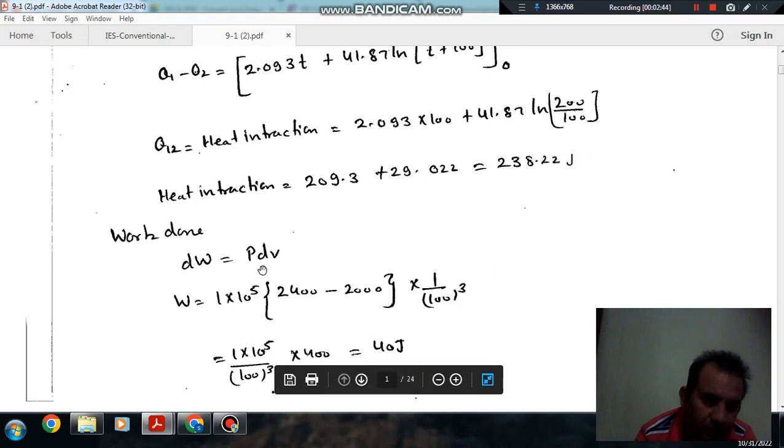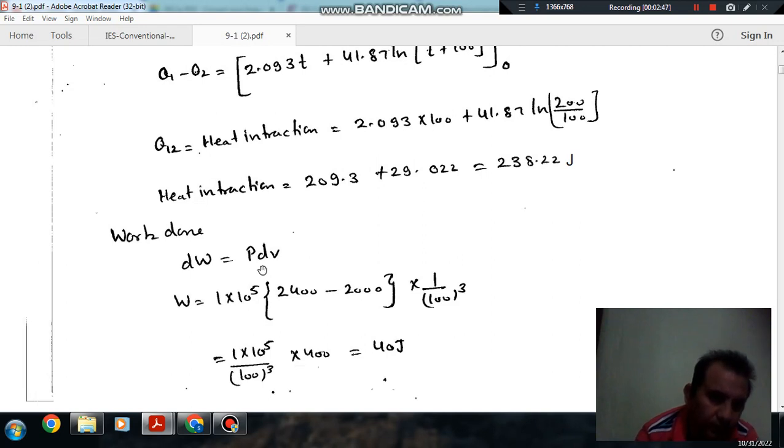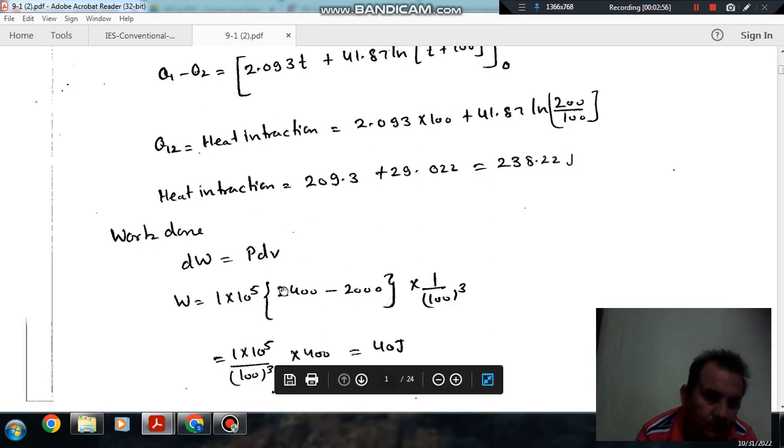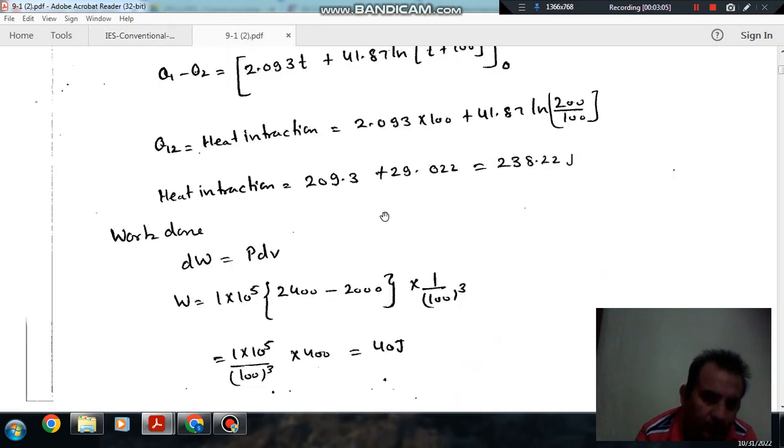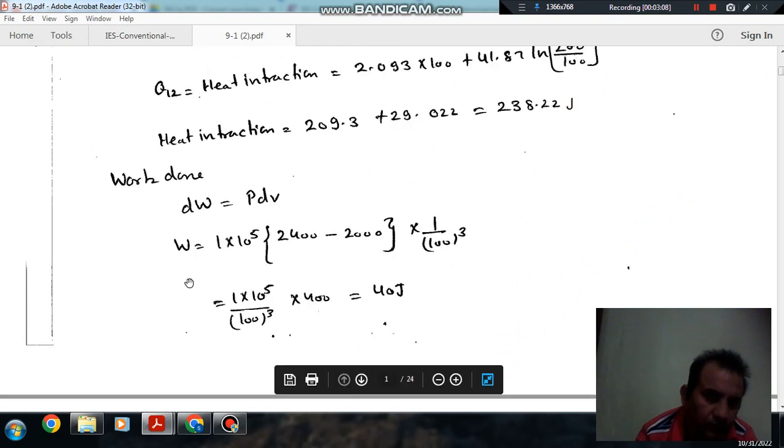As pressure is constant, work done is P(V₂ - V₁). Final volume and initial volume are given. Final volume is 2400 and initial volume is 2000, units are centimeter cube, so converting into meter cube by dividing by 100 cubed. So W will give you 40 joules.